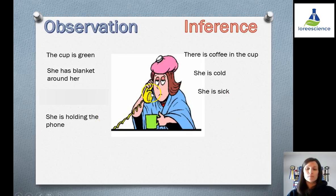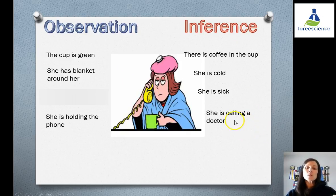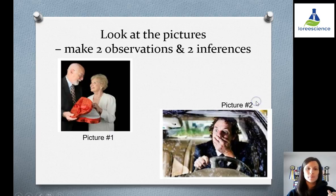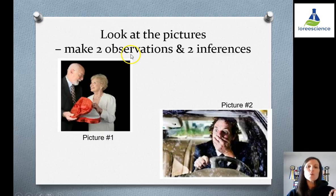She's holding the phone — we see that for sure. We observed it, so we know it's an observation. An inference might be that she's calling the doctor, because everything else we see makes us think she might be sick. So I'd like you to look at the pictures and, for each picture in your notes, make two observations and two inferences.